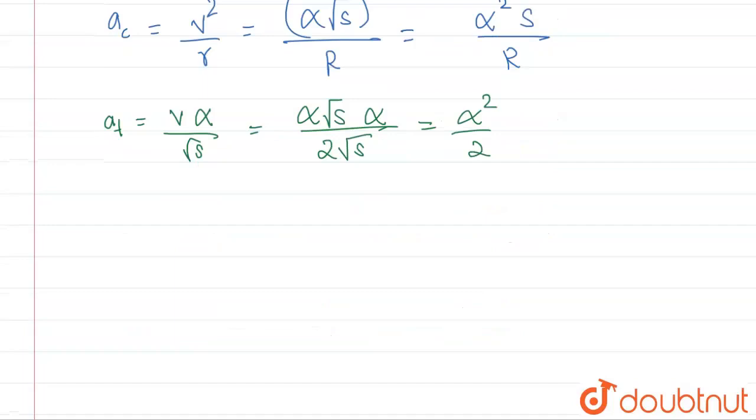Now, if you see properly, the net acceleration is given by the square root of a_t squared plus a_c squared, because they are perpendicular to each other.